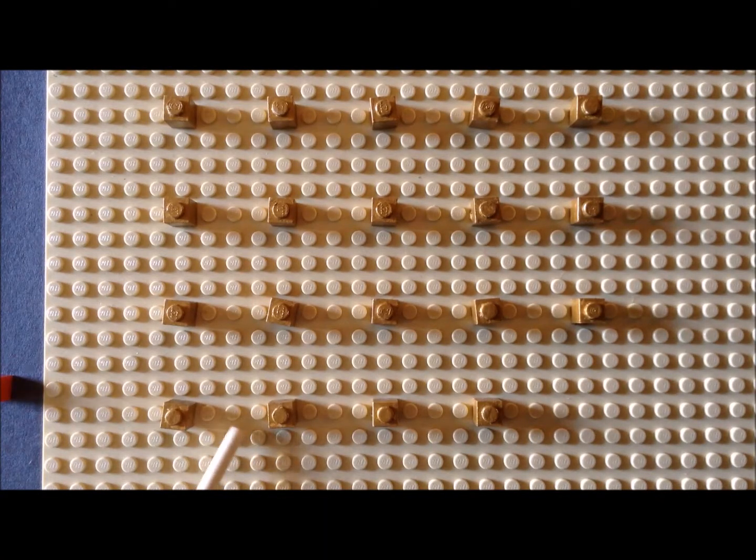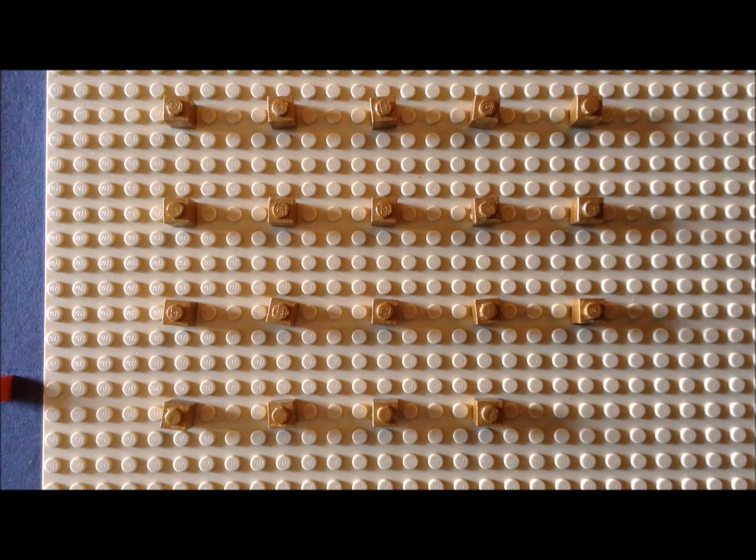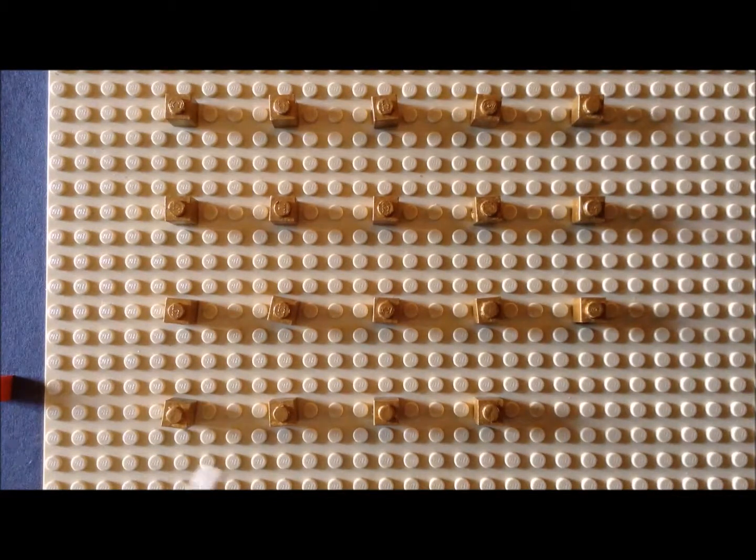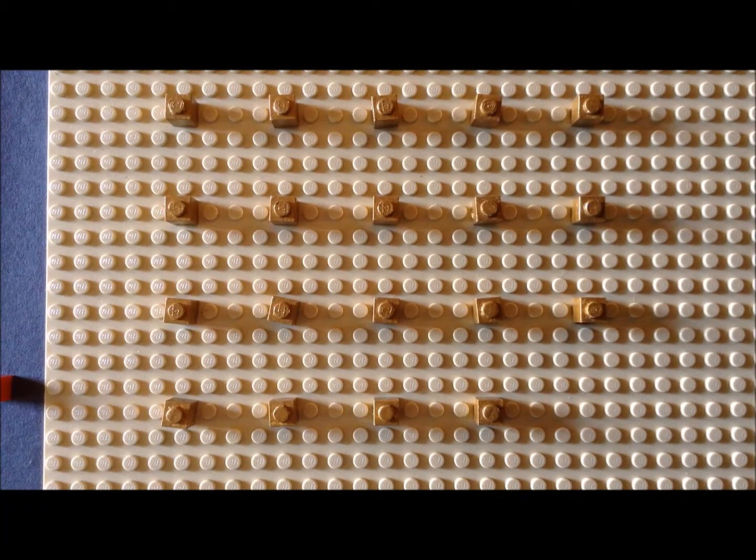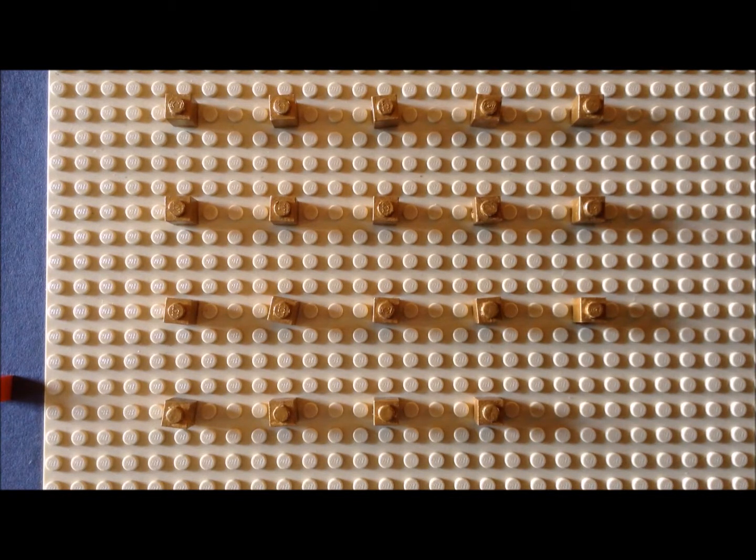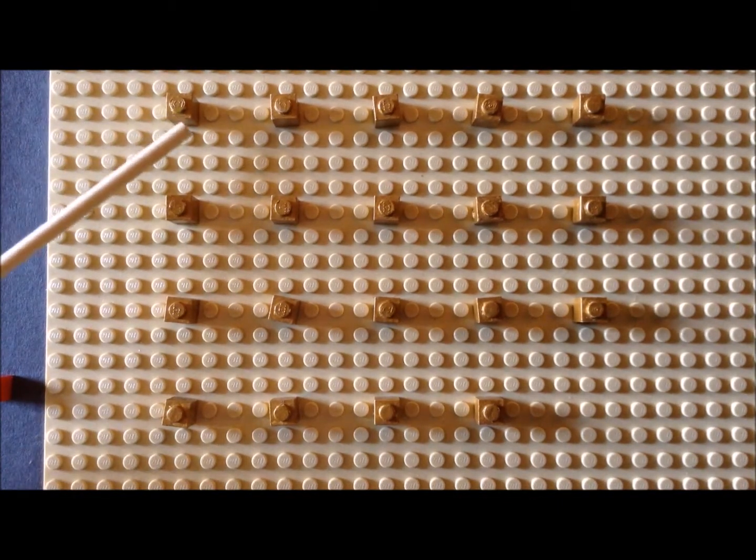These small circular projections are called studs. The base plate here has a very convenient square arrangement of studs, which allows us to use it as a very convenient Cartesian coordinate system. So for example, we can develop a simple square lattice starting up here.